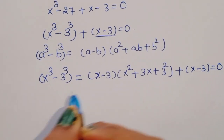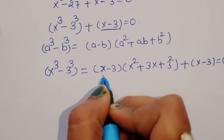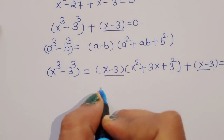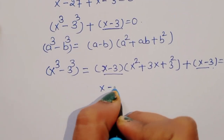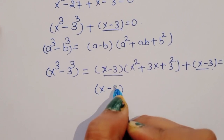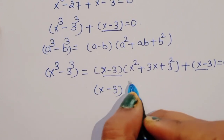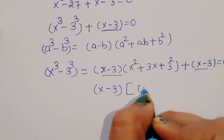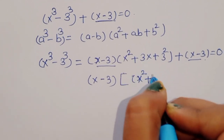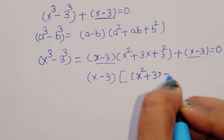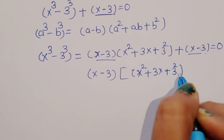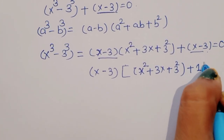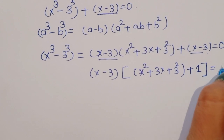So we get (x − 3)(x² + 3x + 9) + (x − 3) = 0. We can see that (x − 3) is common here, so we factor it out: (x − 3)(x² + 3x + 9 + 1) = 0.